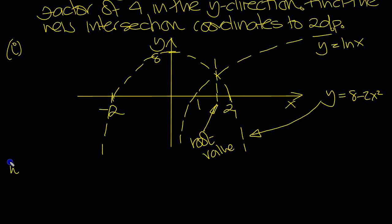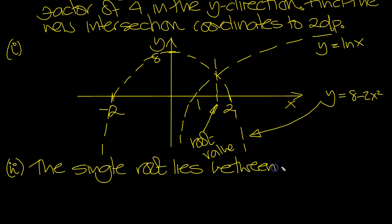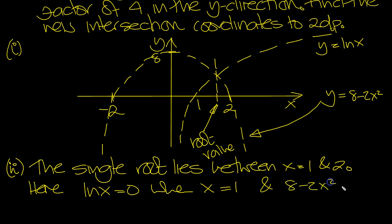Part two: explain why this root lies between 1 and 2. The single root lies between x = 1 and 2. Here, ln x = 0 when x = 1, and 8 - 2x² = 0 when x = 2.